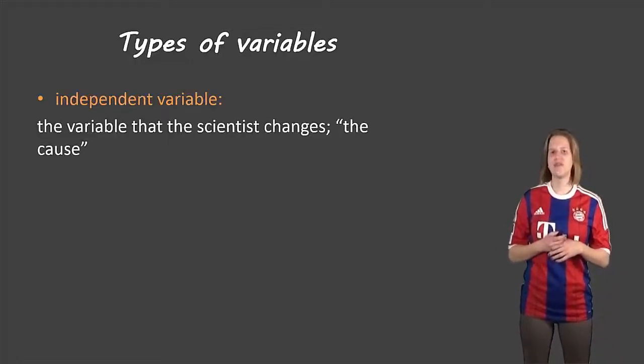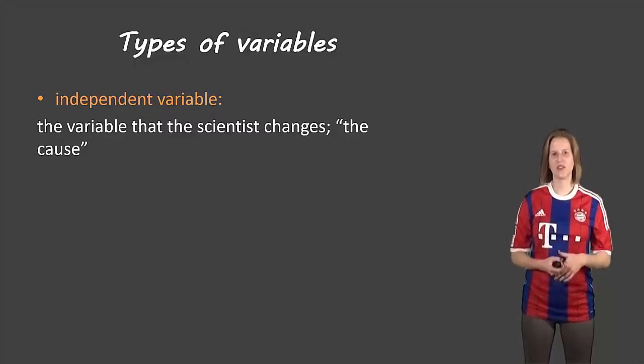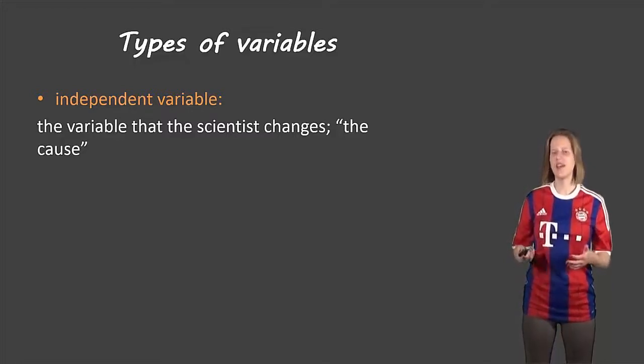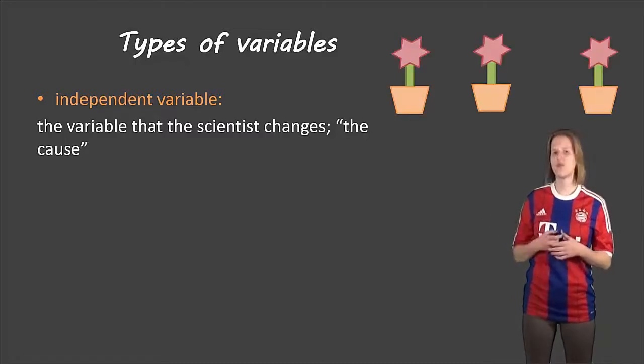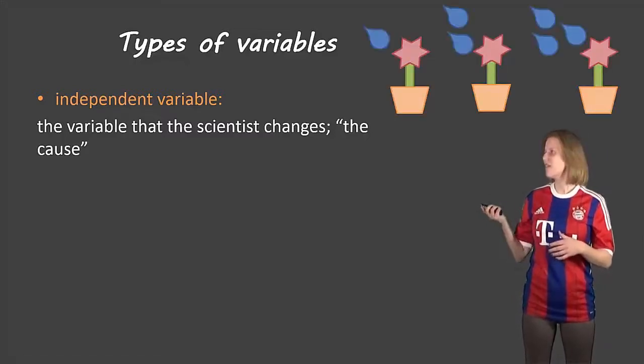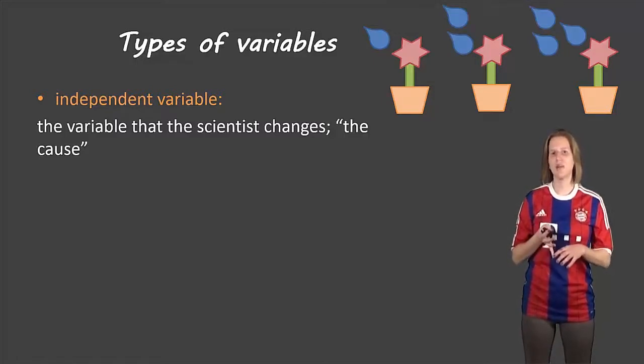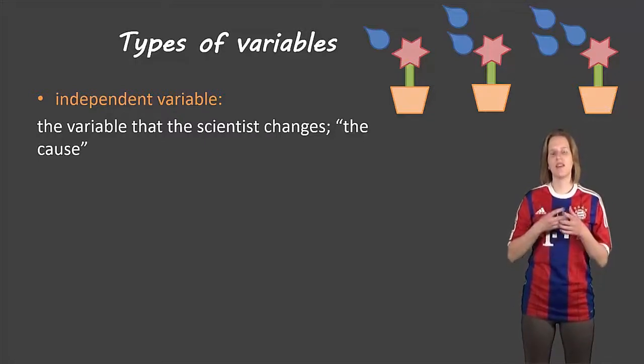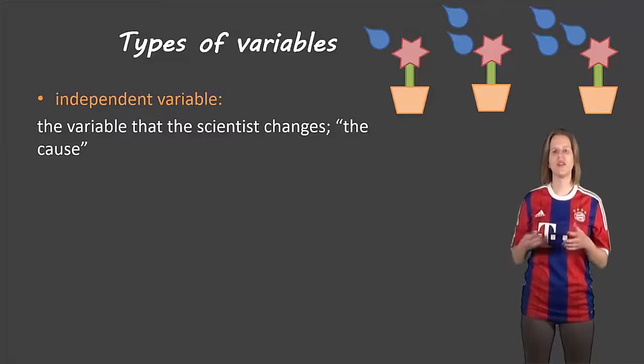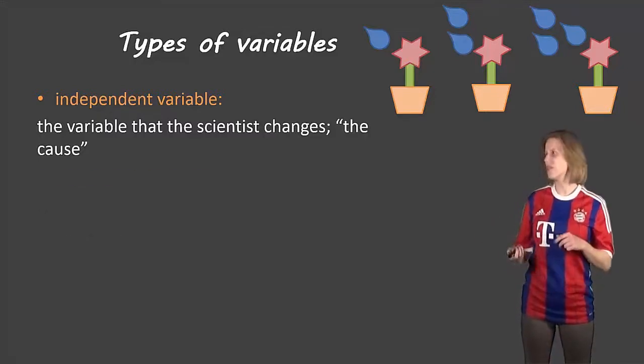The first type of variable is an independent variable, and this is the thing that the scientist changes, or sometimes it's called the cause. Let's say a scientist had three flowers and gives them different amounts of water. One gets a certain amount of water, the second one gets twice as much water, and the third one gets three times as much water. The thing that changes is the amount of water. That's what the scientist is controlling. So that's the cause, that's the independent variable.